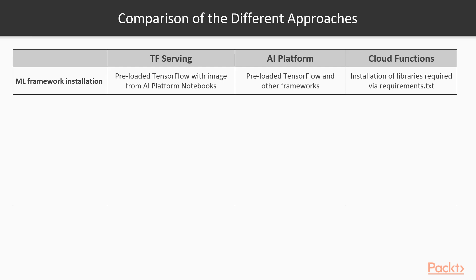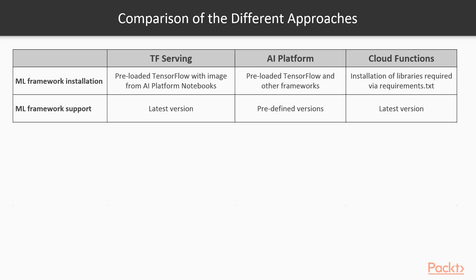Only on cloud functions do you need to explicitly specify which libraries you require using a file called requirements.txt. Talking about machine learning framework support: TensorFlow Serving can use the latest version because you control what you install on your own server. AI Platform is a managed service with only predefined versions — for example, at the time of this recording AI Platform did not support TensorFlow 2, though that was expected soon. Cloud functions also support the latest version since you just specify it in requirements.txt.